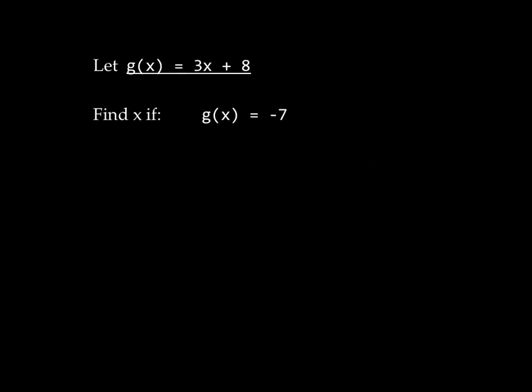Okay, try the next one. This time, I'm using g of x instead of f of x, but that's just the same thing. g is a function that depends on x, and for some mystery value of x, we get negative 7. Go ahead and pause now and give it a try.